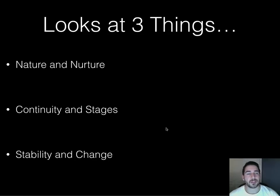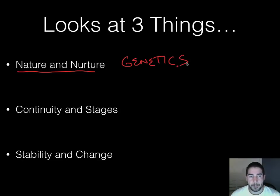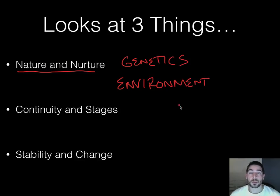Developmental psychology wants to look at three things. Number one, it wants to talk about nature and nurture. Nature refers to genes or genetics, and nurture is the environment. We're wondering, as people develop, is it the genes causing the child or adult to do the things they're doing, or is it the environment? Usually we find a combination of both.